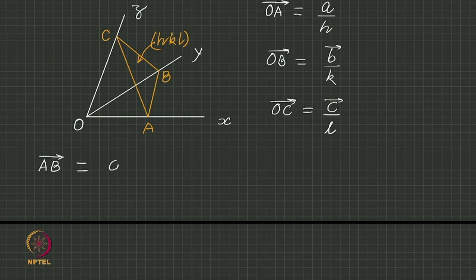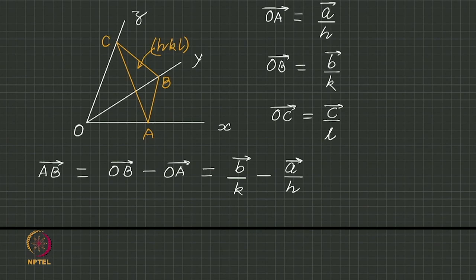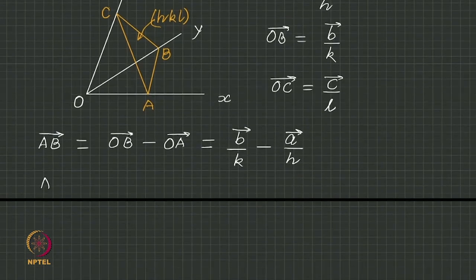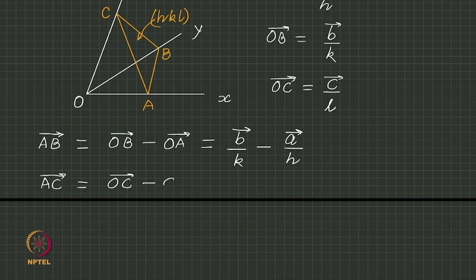Vector a b is nothing but o b minus o a. This is b by k minus a by h. And vector a c is o c minus o a, which is equal to c by l minus a by h.